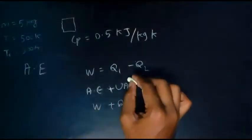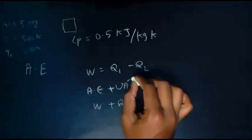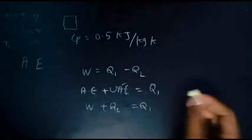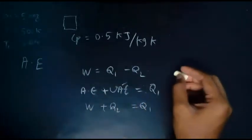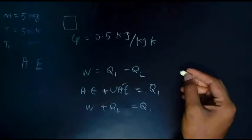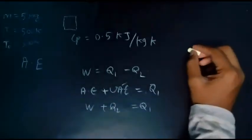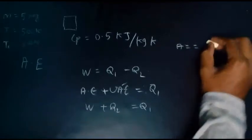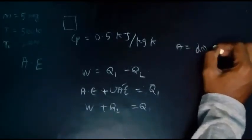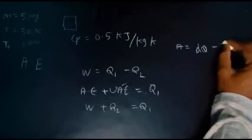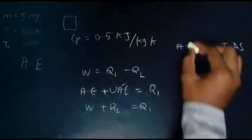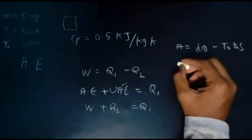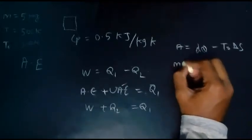We know the formula for unavailable energy, that is the irreversibility, T naught into delta S. So Q1 is dq. Available energy is equal to dq minus T naught into delta S. I have already derived it in my previous video. So the formula for dq is mCp into delta T.